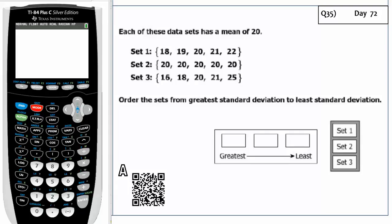All right. Question 35 is a standard deviation question. It says each of these data sets has a mean of 20, which means they all have the same average. Order the sets from greatest standard deviation to least standard deviation.